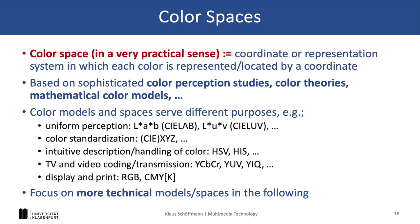For example, RGB addresses displays and monitors, where we have an additive color model, while CMYK is used for printing, and YUV is used for image and video encoding and compression.